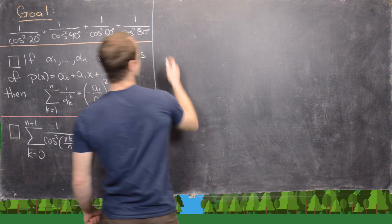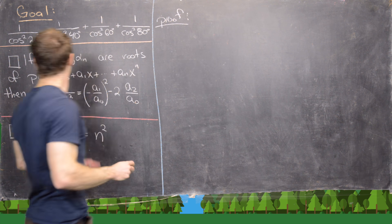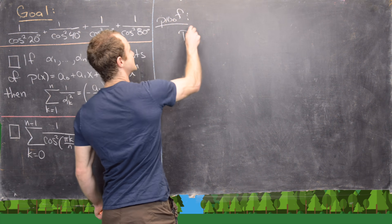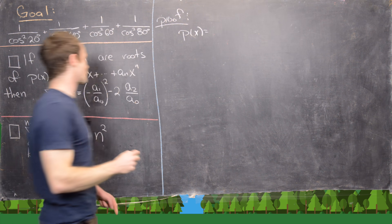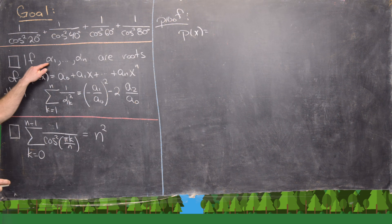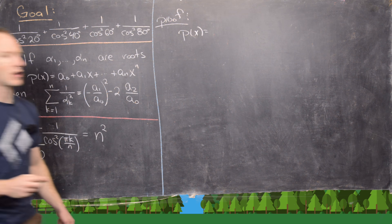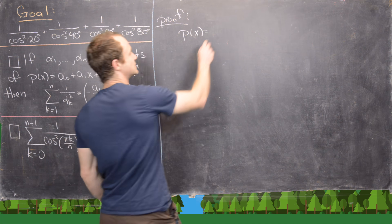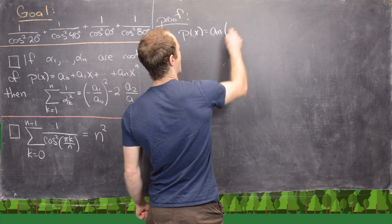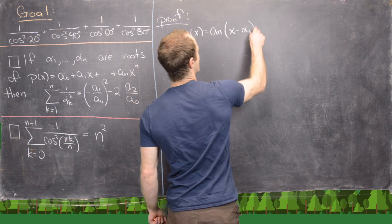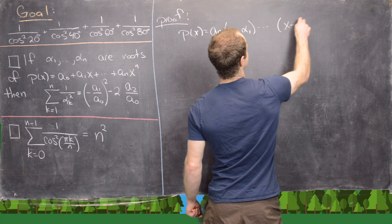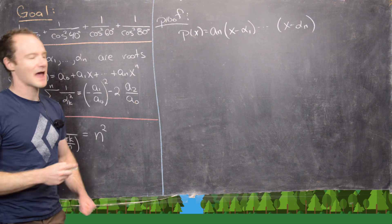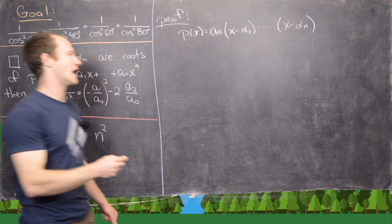Let's look at the proof of the first tool. We take p of x, and since we know all of the roots alpha 1 through alpha n, we can factor it. The leading coefficient is a sub n, so we can factor that out and get a_n times (x minus alpha 1) all the way up to (x minus alpha n).